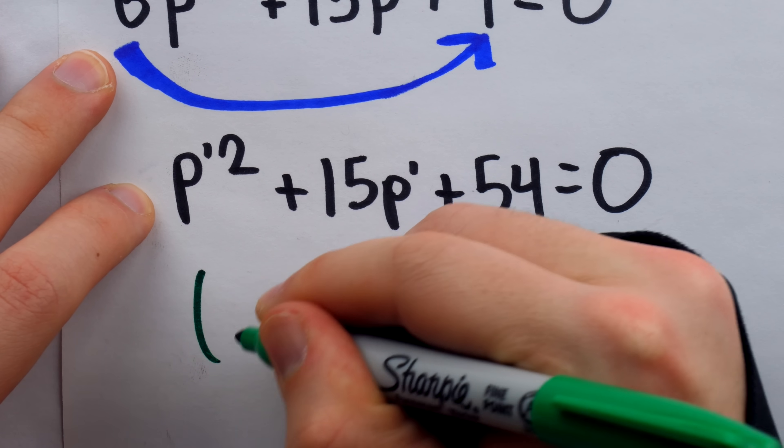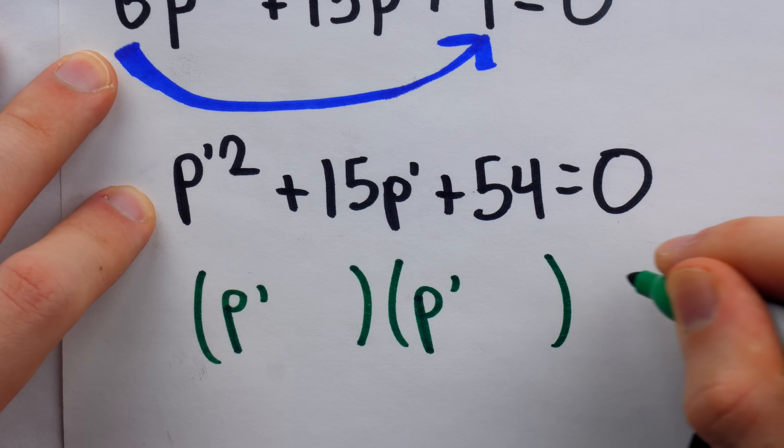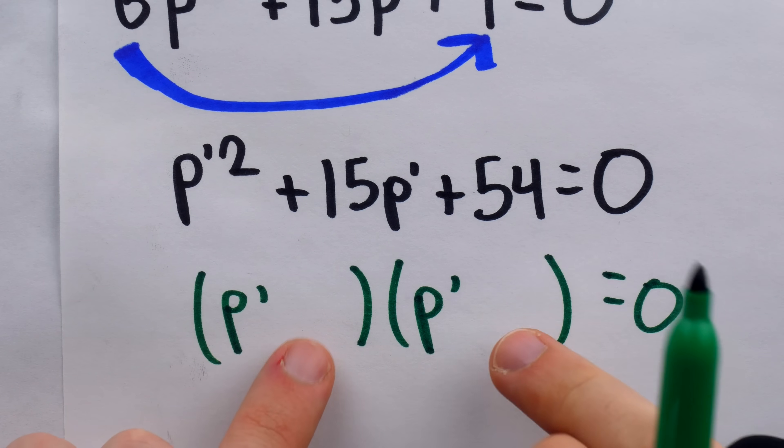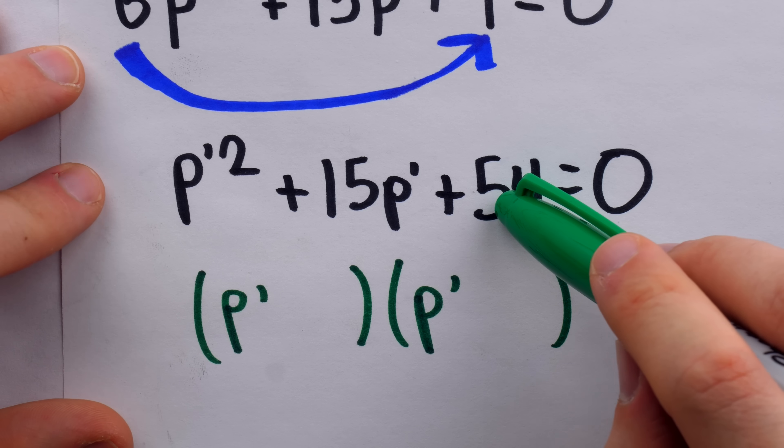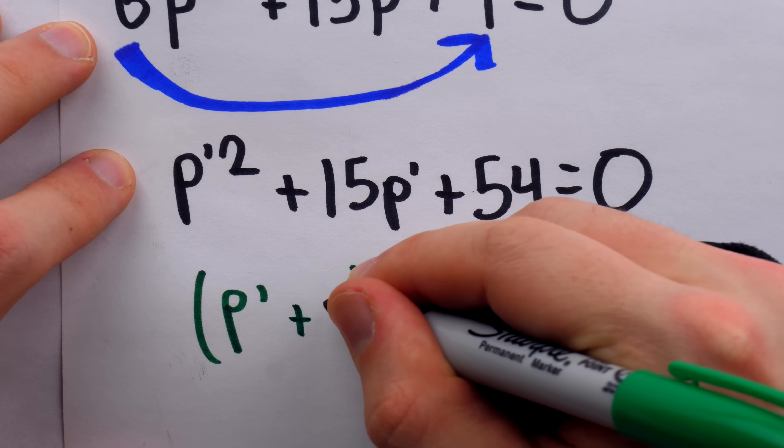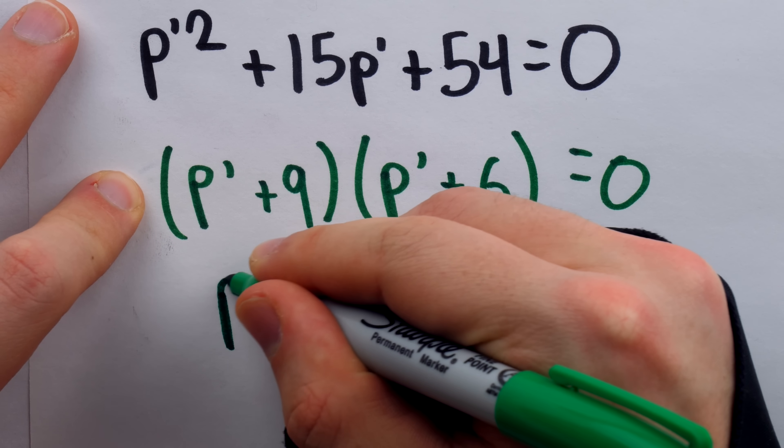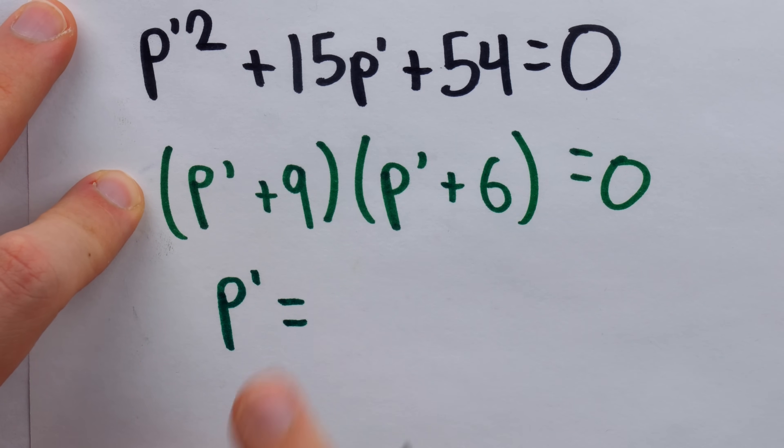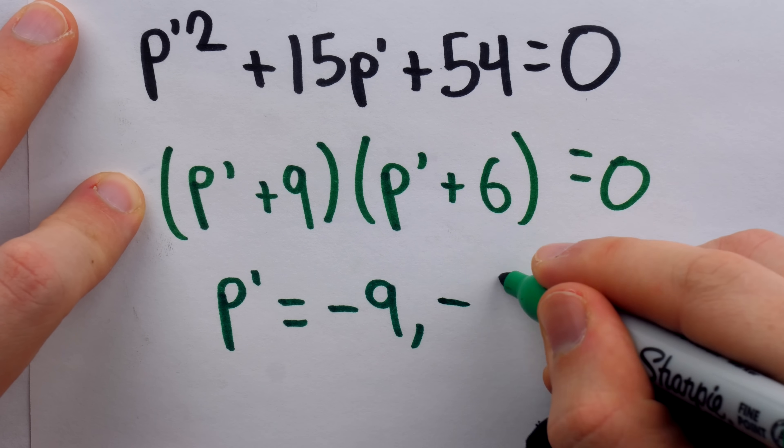So to factor this, we're going to have p prime something times p prime something equals 0. Well, we know these numbers have to multiply to positive 54, so how about 9 and 6? 9 and 6 add to 15 in the middle, so indeed that's exactly what we are looking for. So then by the zero product property, we have that p prime equals negative 9, or p prime equals negative 6.